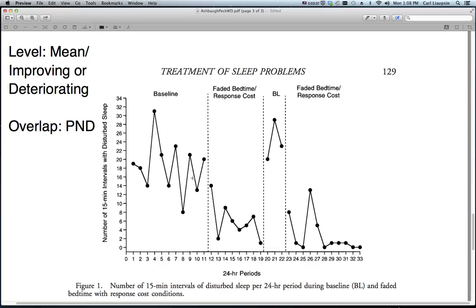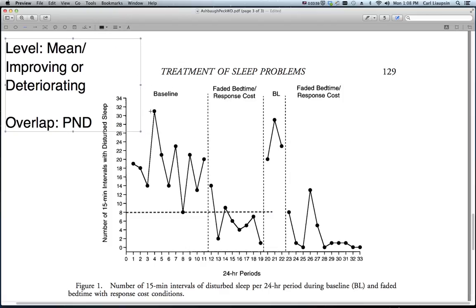The way you would do that is really pretty simple. First, you figure out the range of the data in the preceding phase — the prior phase. That is from this low point of 8 up to — oops, grabbed the wrong thing — up to probably 31 here. So what you can see in this first intervention phase is that we have some data points that overlap with the data in the baseline when there was no treatment or intervention in place.